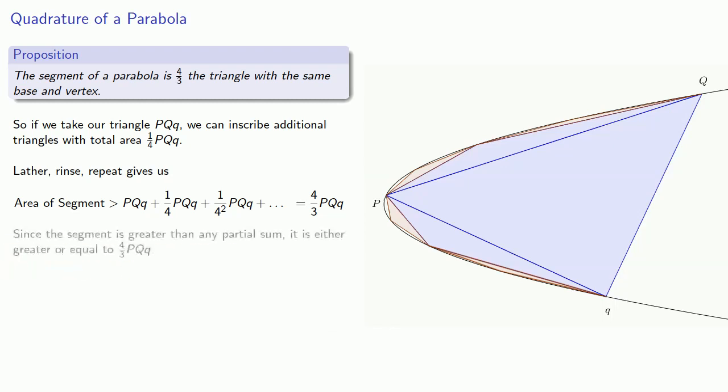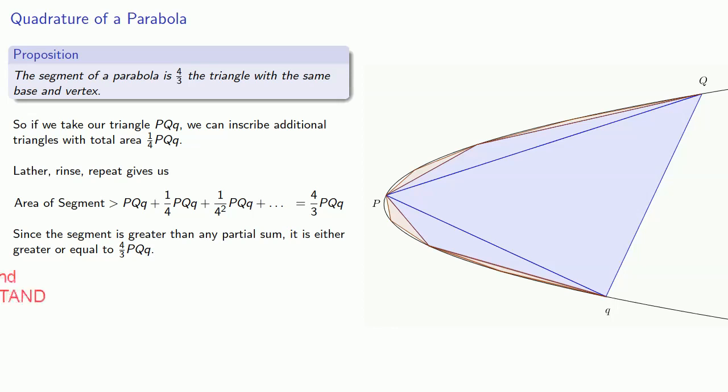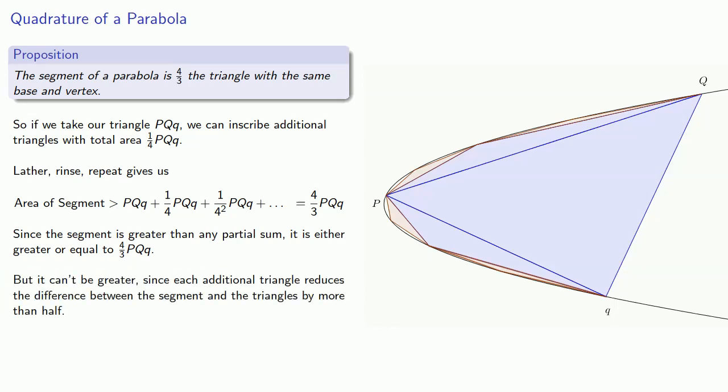And since the segment is greater than any partial sum, it's either greater or equal to 4/3 PQQ. But it can't be greater since each additional triangle reduces the difference between the segment and the triangles by more than half, so it must be equal. And so that gives us the area of the parabolic segment as 4/3 the area of the triangle with the same base and vertex.